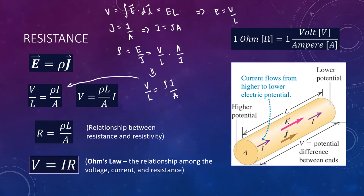One important note: Ohm's law is an idealized model that assumes the ratio between electric field and current density is constant. This means resistance must also be constant — V/I must be constant for V = IR to hold as Ohm's law. This is a special case; the full theory is more complicated. V = IR is only applicable when resistance is constant.